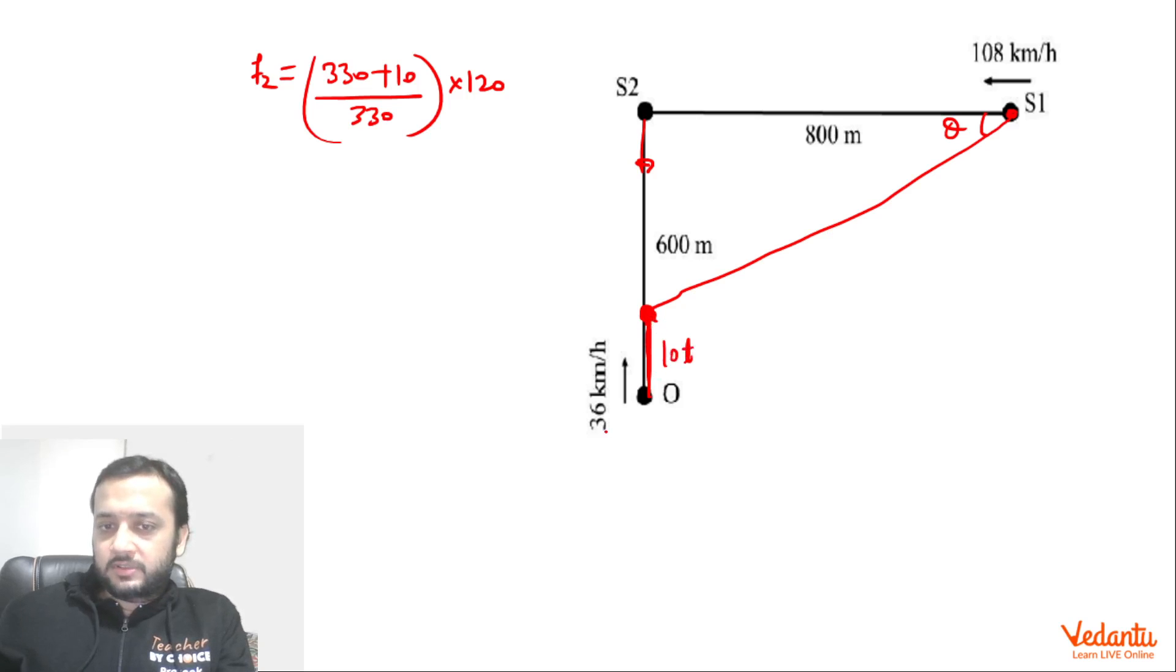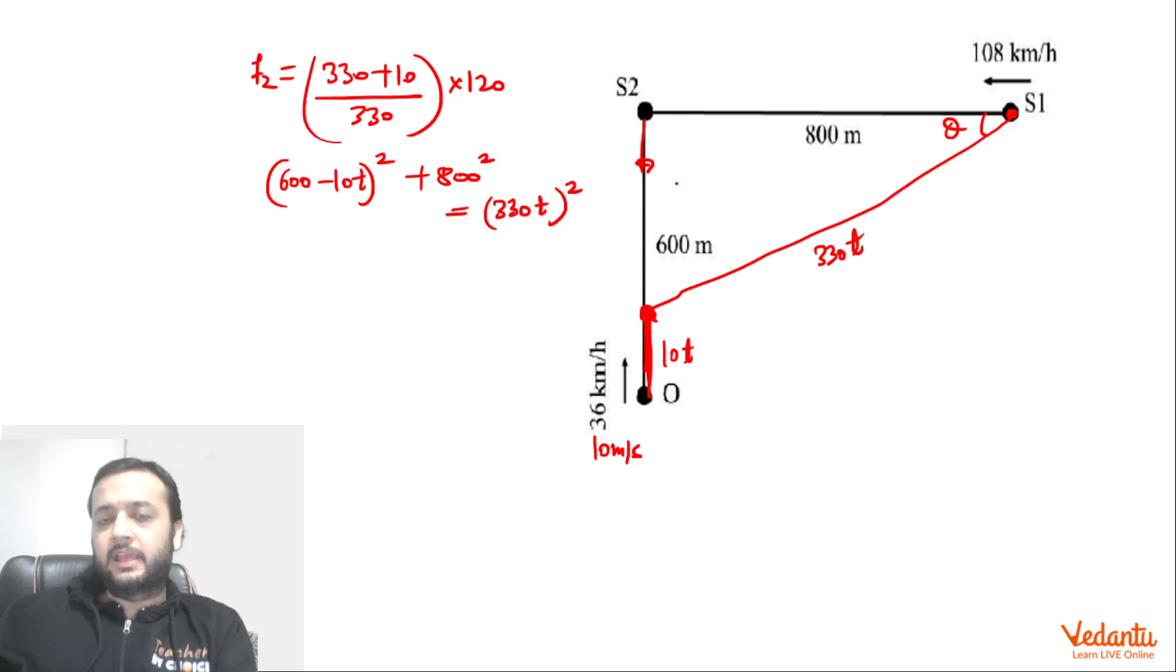So how to calculate this angle? First we will find time. Let's say observer catches this wave after time t. So this distance will be 10t because the speed of the observer is 10 meters per second. And this distance will be 330t because sound has taken time t to travel this much. So we can apply Pythagorean theorem in this right angle triangle. This distance will be 600 minus 10t whole square plus this is 800 equals to this distance 330t whole square. Now you might be feeling that source will also move ahead after releasing the sound. That's correct. Source will also move ahead. But we don't have to be bothered by that. We have to be bothered by this much, this distance that at what distance observer has caught the sound. So we are concerned with the position of the source at the moment of releasing and we are concerned with the position of the observer at the moment of receiving.